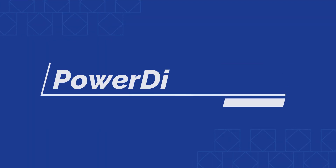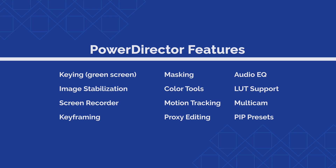The first editing software I recommend is PowerDirector. It is a good software for beginners especially because it offers all the professional tools listed on screen right now. In my opinion, having the ability to do things like keying, masking, image stabilization, motion tracking, audio mixing, and color grading — that's all you really need to produce professional sports videos.